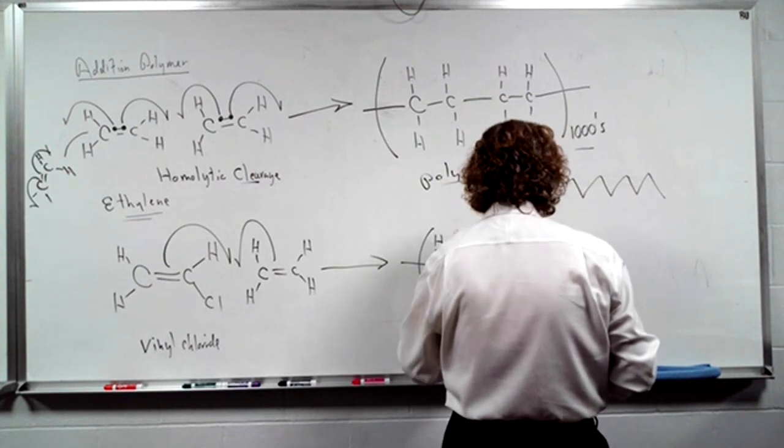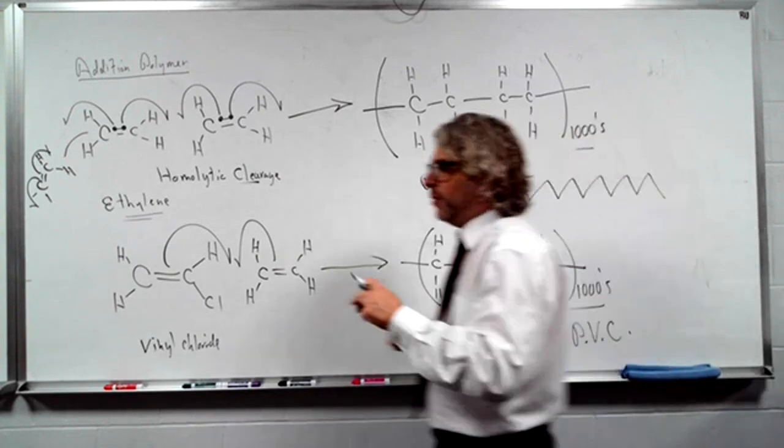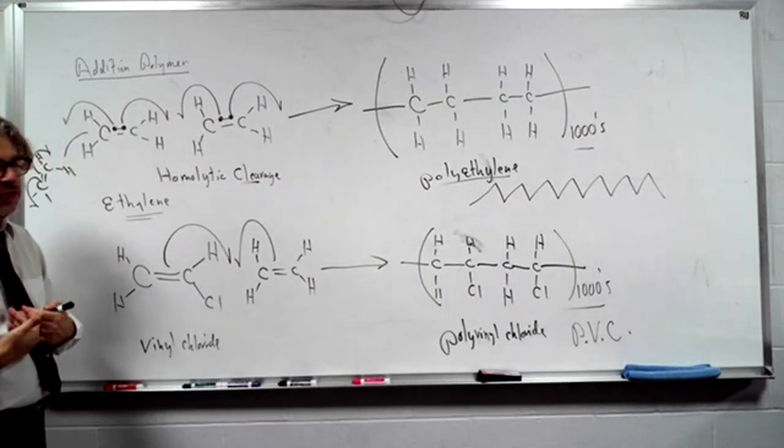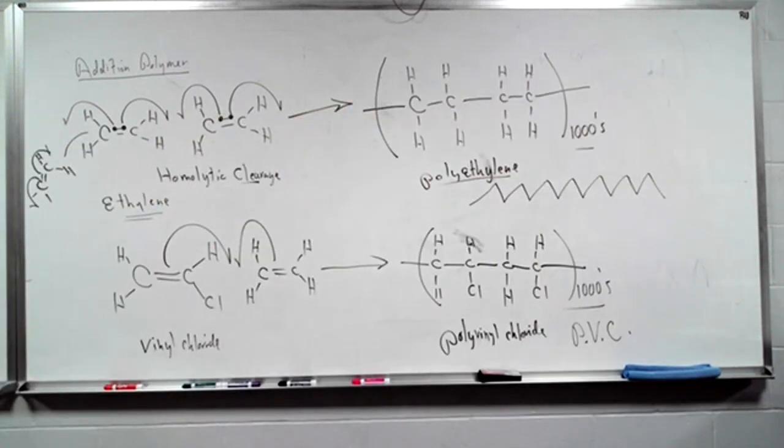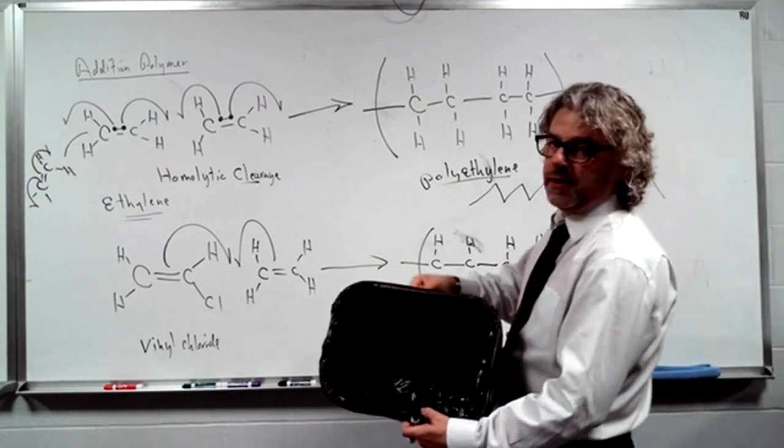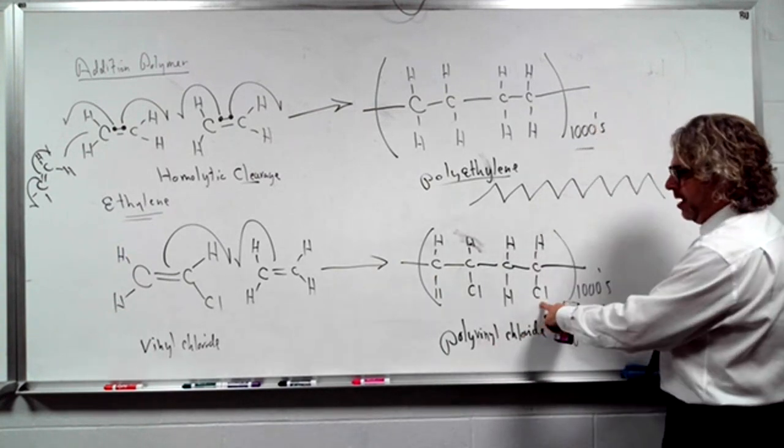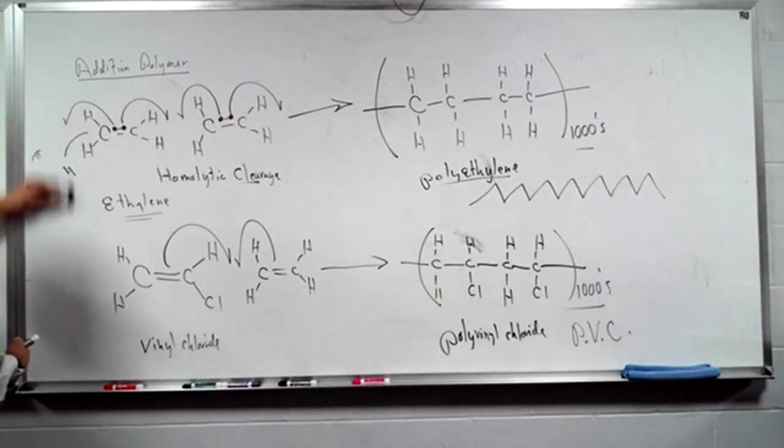If this is ethylene, it makes polyethylene. If this was vinyl chloride, it makes polyvinyl chloride. We call this PVC. So, I hope in your life you might have heard of a PVC pipe. It can hold water. It's pretty rigid.